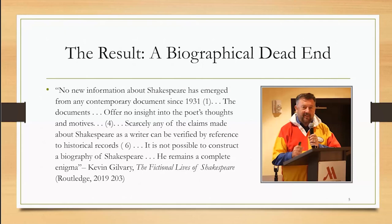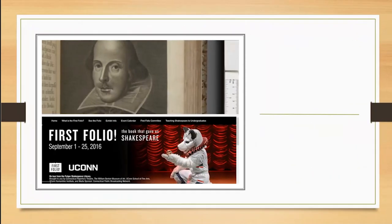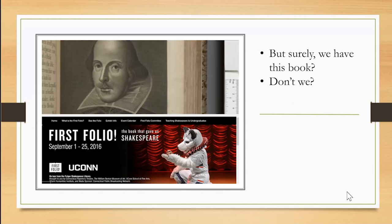Just to bring this up to the present — since time requires an abbreviation of this history of doubt, which many of you are well aware of through the work of Warren Hope, Kim Holston, and James Warren — here are some brief quotations from Kevin Gilvary's recent The Fictional Lives of Shakespeare: 'No new information about Shakespeare has emerged from any contemporary document since 1931. The documents offer no insight into the poet's thoughts and motives. Scarcely any of the claims made about Shakespeare as a writer can be verified by reference to historical records. It is not possible to construct a biography of Shakespeare. He remains a complete enigma.' But wait — we have this book, right? The book that gave us Shakespeare? The book that proves that Shakespeare was Shakespeare, or somebody else of the same name, doesn't it? To explore this question, let's look a little more closely and carefully at the book.